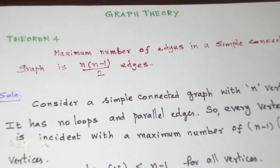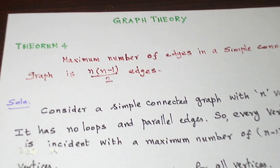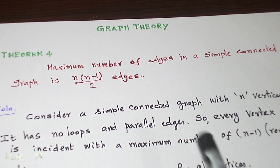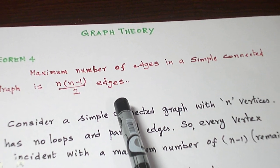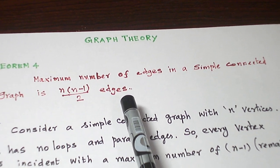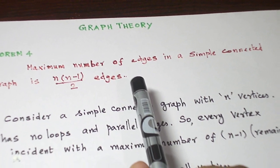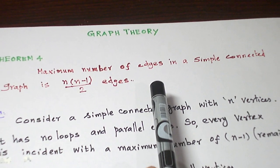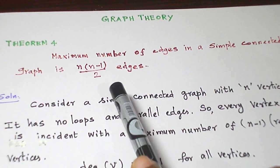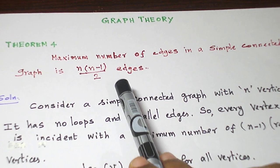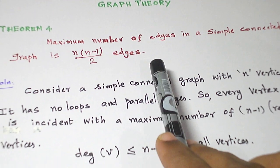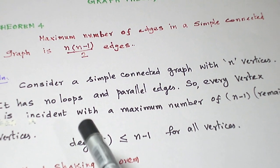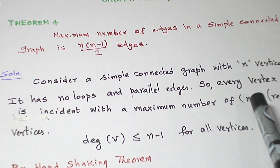Hello students, today let us see a basic theorem on the topic of graph theory. The theorem is this: how many maximum number of edges can a simple connected graph have? The answer is a maximum of n(n-1)/2 edges if the graph has n vertices. So, let us take a simple connected graph with n vertices.